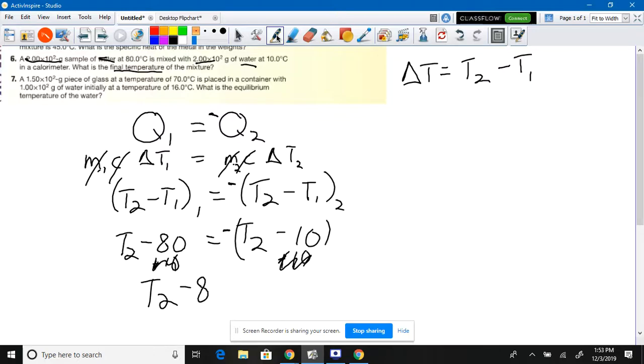OK, so T2 minus 80 equals negative T2 plus 10. Sorry about that, Chris Chernigan. My bad, man. I didn't mean to upset the universe. I apologize. OK, so here we go. So T2 equals negative T2.